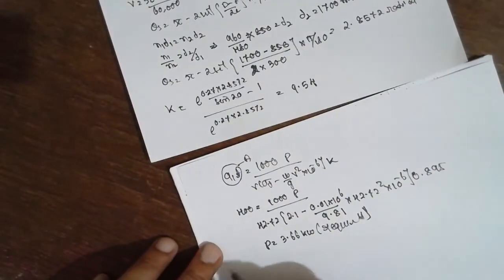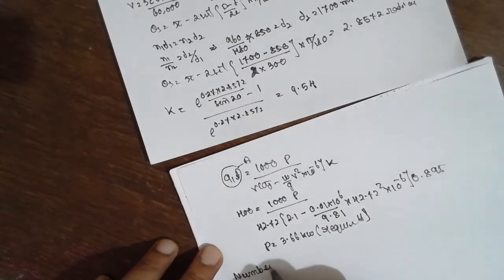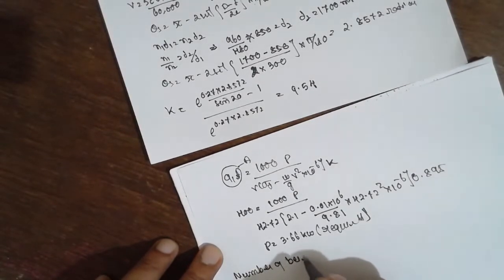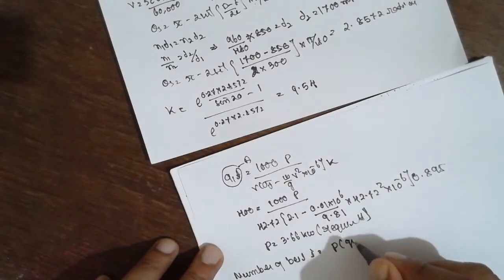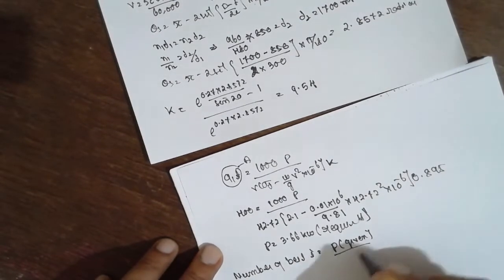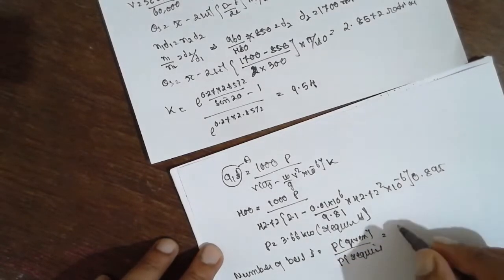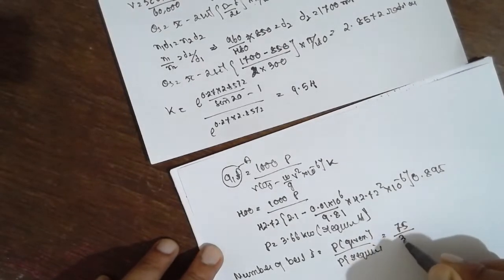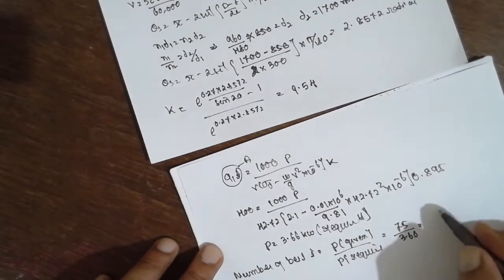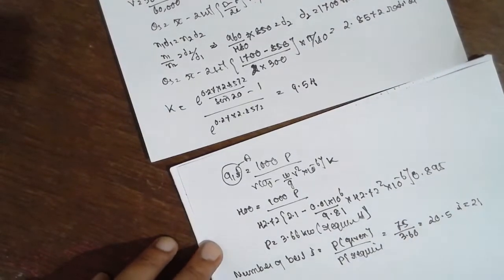Consider this is required. Now finding the number of belts, that is, this is nothing but P given divided by P required. Problems are very simple here. P given is 75, already they are given, divided by 3.66. The answer will be 20.5, consider approximately 21 belts.